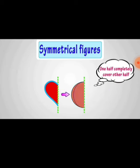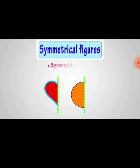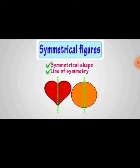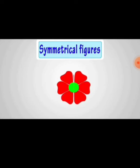When one half is closed, completely closed, it looks like the same size and same shape. The dotted line is called line of symmetry. When the figure looks like the same size and same shape, the dotted line is called line of symmetry. This shape is called a symmetrical shape.